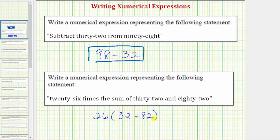Notice how if we did not have the parentheses around the sum, we would have 26 times 32 plus 82, and this is just 26 times 32, not 26 times the sum. So this is the correct expression, however I do want to mention...